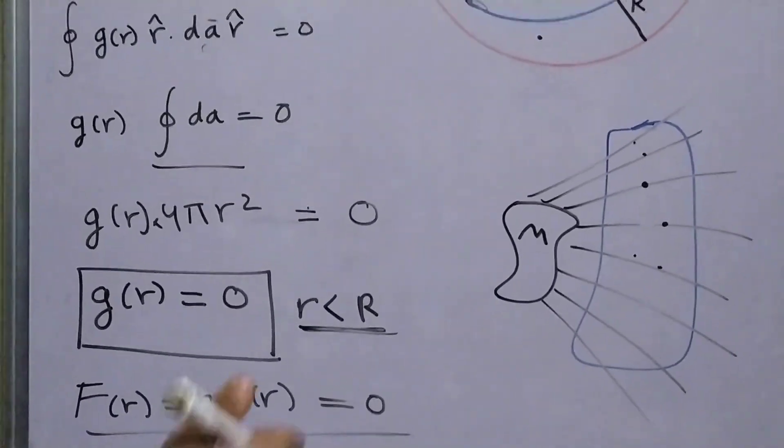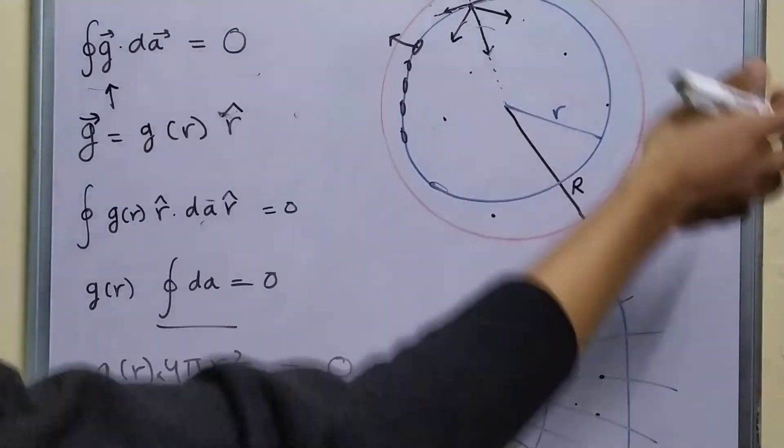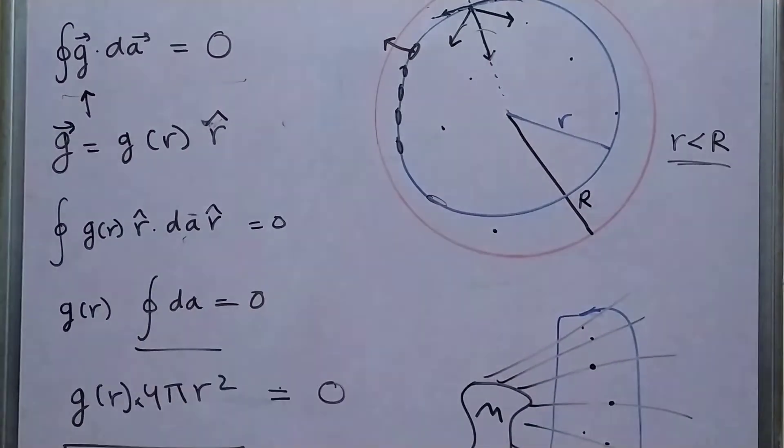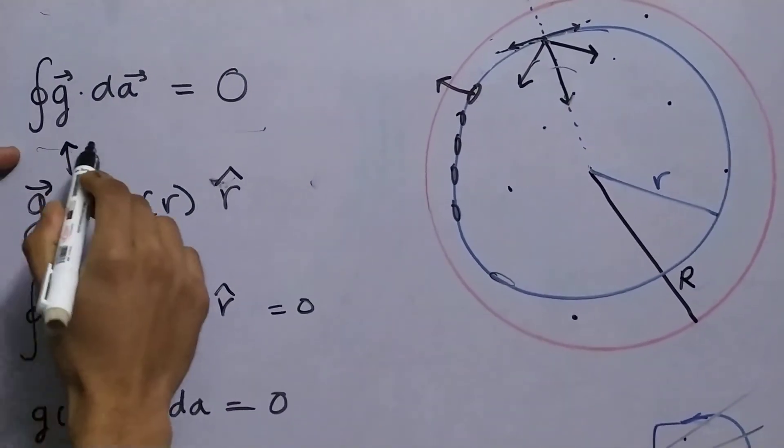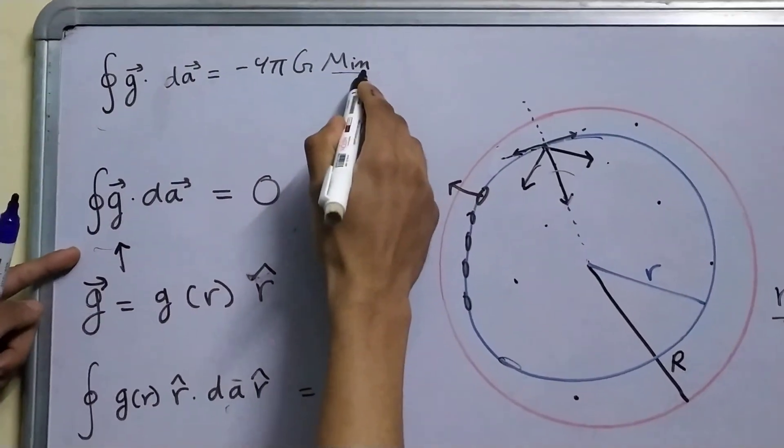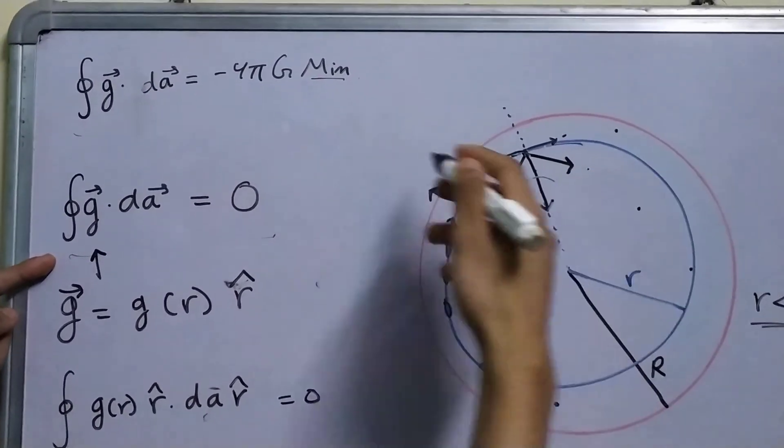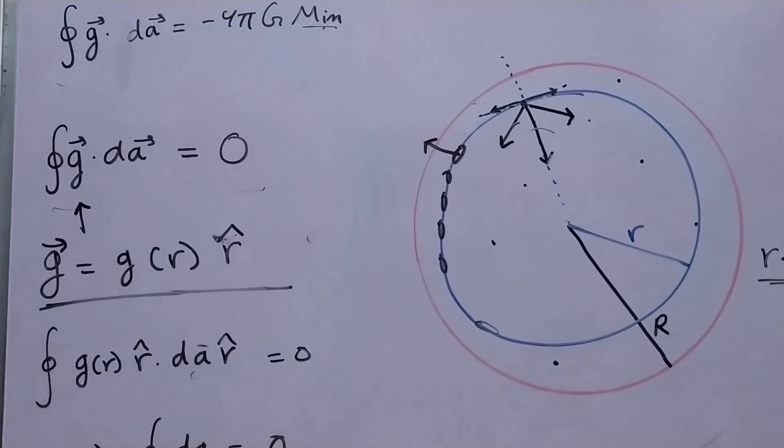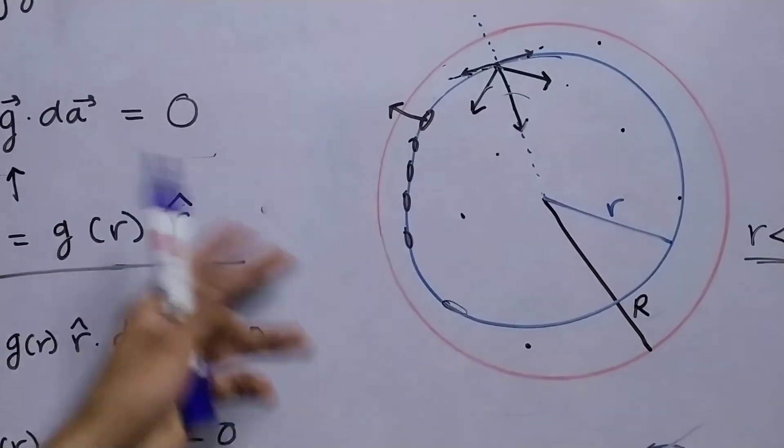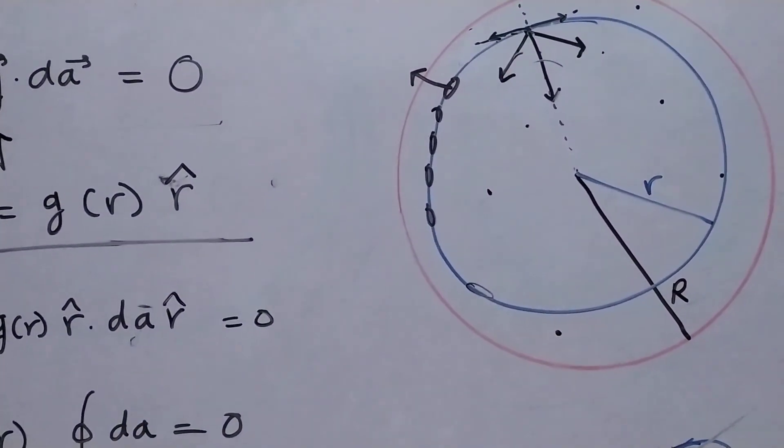So, a body does not experience any force anywhere inside a hollow sphere. You see, it is not only because the mass inside the Gaussian surface is zero, it is also due to the spherical symmetry of the mass distribution around the Gaussian surface.